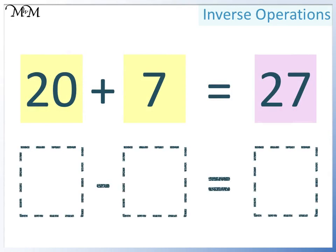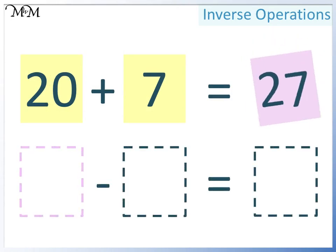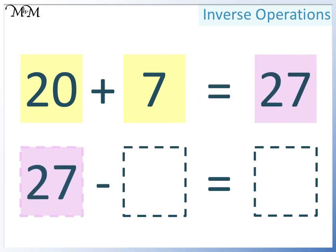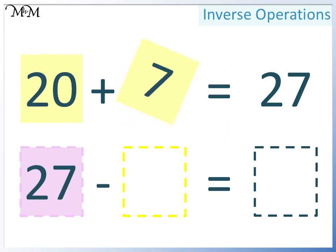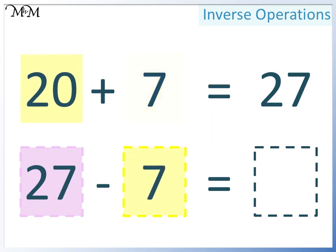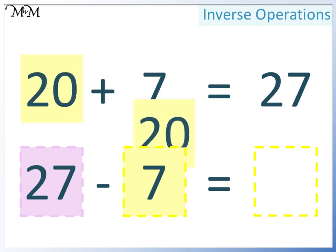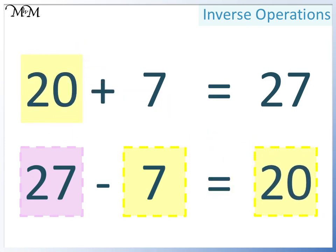Now, for the second subtraction. Again, 27 must be at the start. This time, we'll subtract 7. And so, it must equal 20. 27 take away 7 equals 20.